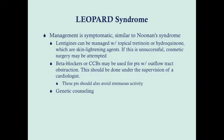Patients with an outflow tract obstruction will also require avoiding strenuous activity. This is important — we hear about previously healthy athletes who suddenly die of heart failure or an arrhythmia in the middle of a basketball court at 19 or 20 years old, and it's usually something like hypertrophic obstructive cardiomyopathy. Patients with Noonan Syndrome or Leopard Syndrome are at risk for that, so if they have an outflow tract obstruction, they should avoid strenuous activity. Genetic counseling is also recommended for these patients.